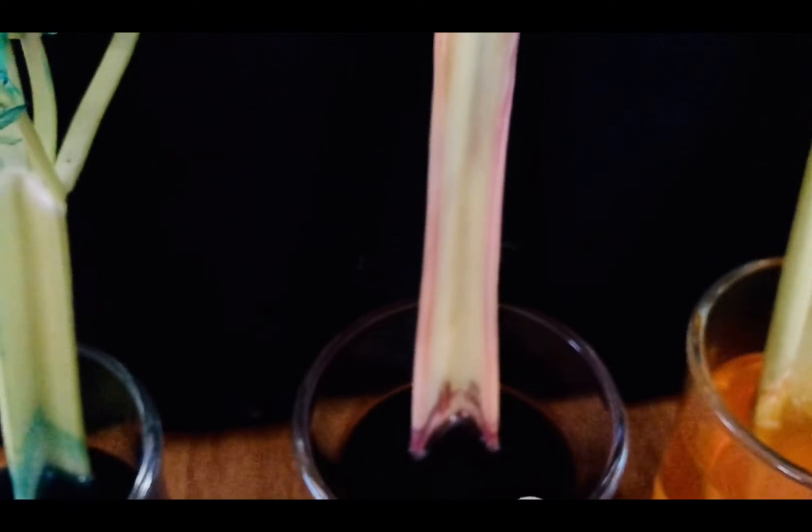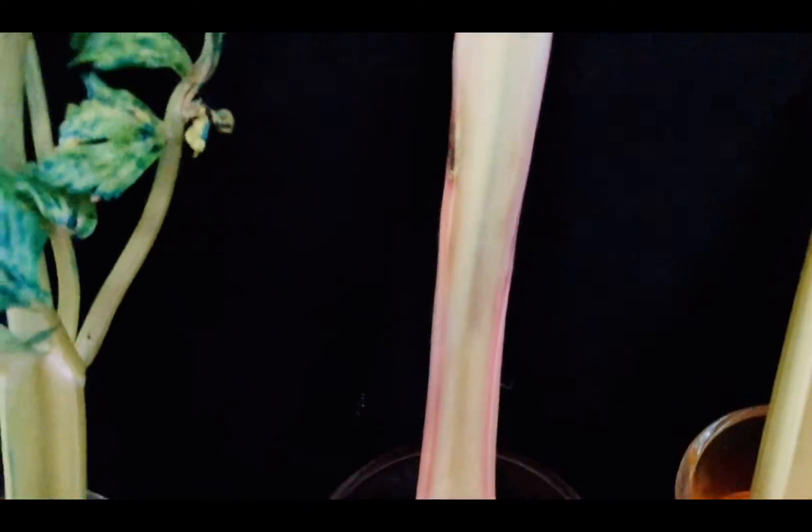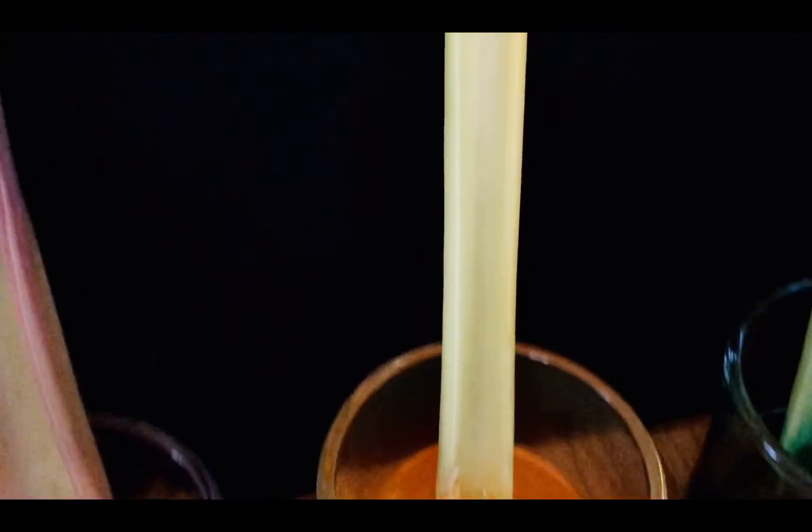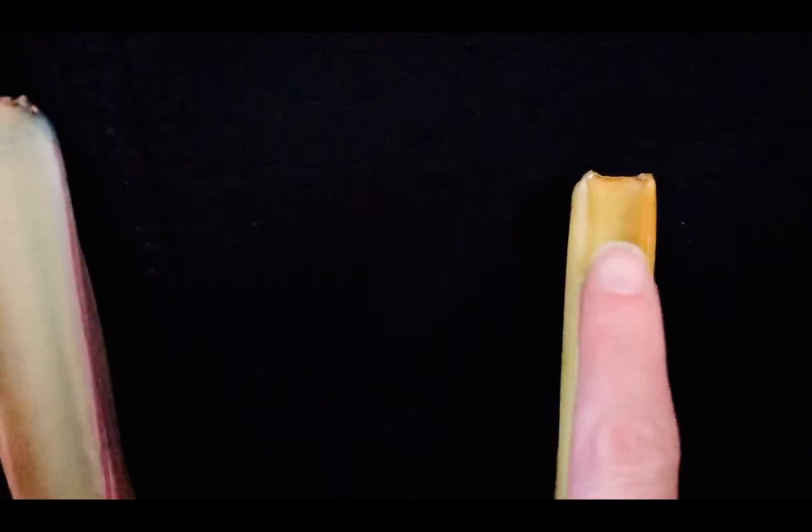In this cup I did purple food coloring and you can see the purple has traveled up the celery. In this cup I have yellow and it's a little bit harder to see, but you can see a collection of the yellow up here at the top of the celery.